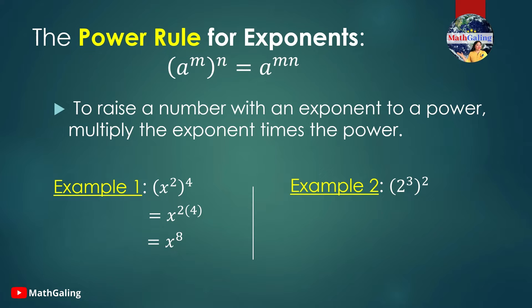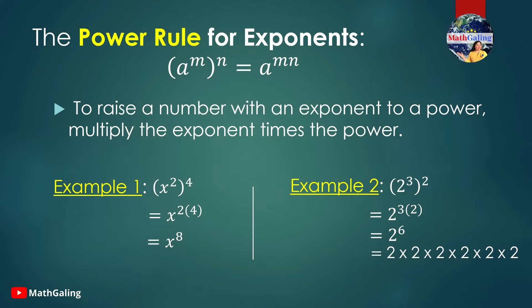Another example is 2 cubed raised to the second power. You copy base 2, raised to the 3 times 2. 3 times 2 is 6, so you have 2 to the sixth power. Remember, 2 to the sixth power means that you're multiplying 2 by itself 6 times. If we simplify this further, 2 to the sixth is equal to 64.